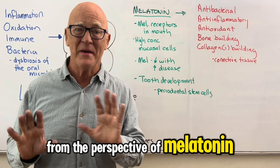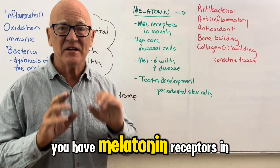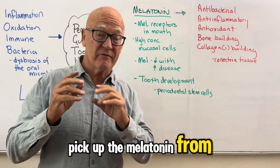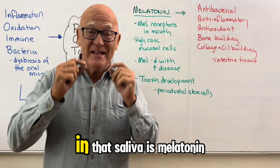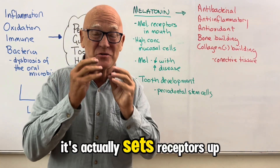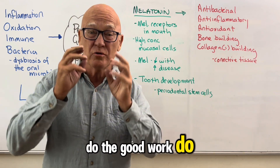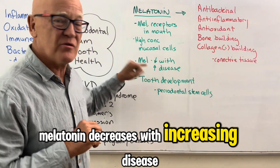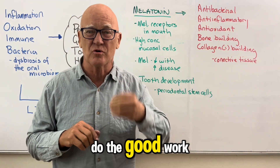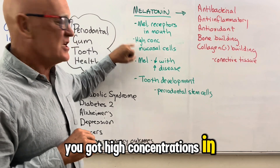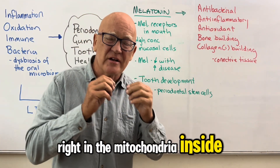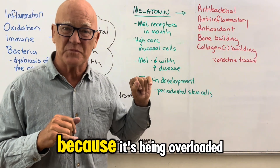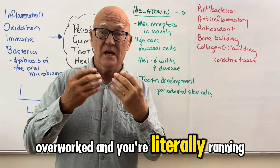From the perspective of melatonin, you have melatonin receptors in your mouth — receptors that pick up melatonin from your saliva. Yes, you produce saliva and in that saliva is melatonin. It signals those receptors to do the good work. However, melatonin decreases with increasing disease, so it's not able to do the good work. You've got high concentrations in the mucosal cells, right in the mitochondria inside the cells in your mouth, but it decreases with increasing disease because it's being overloaded, overworked, and you're literally running out of it.